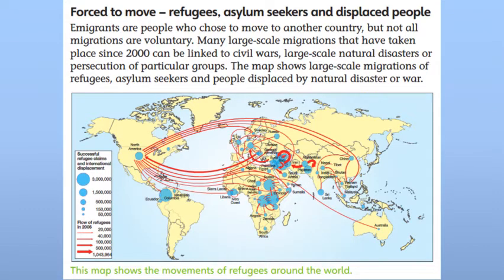This slide is about some people who migrate not because of their own choices or for economic prosperity, but because of factors beyond their control — for example, civil wars and natural disasters. People who move from their areas to another area due to these reasons are called refugees. Refugee migration is a little different from normal migration.